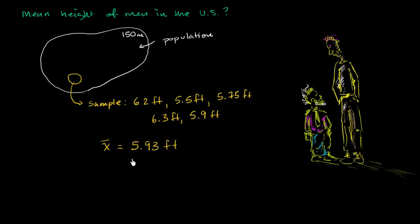This is our sample mean, or if we want to make it clear, sample arithmetic mean. I'm going to denote it with an x with a bar over it: x̄ = 5.93 feet. When we're taking this calculation based on a sample and then somehow trying to estimate it for the entire population, we call this a statistic.